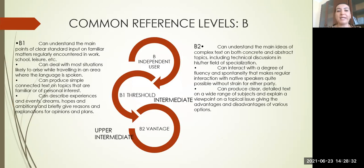Common reference levels B type: B1, which is considered to be an independent user and B1 considered to be threshold, B2 being vantage, expresses that users have independent capacity of using the language. A B1 learner can understand the main points of clear standard input on familiar matters regularly encountered in work, school, and leisure. Can deal with most situations likely to arise while traveling in an area where the language is spoken. Can produce simple connected text on topics that are familiar or of personal interest. Can describe experiences and events, dreams, hopes, and ambitions and briefly give reasons and explanations for opinions and plans.